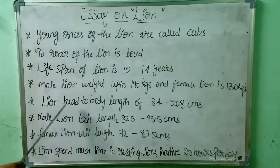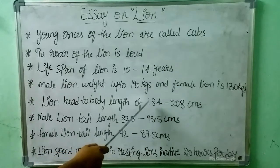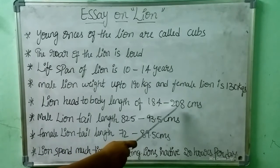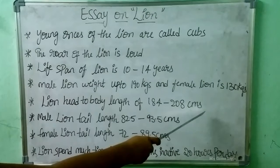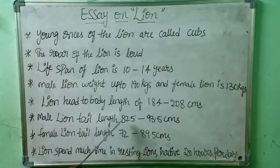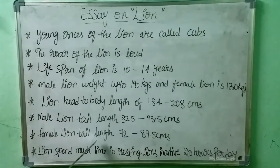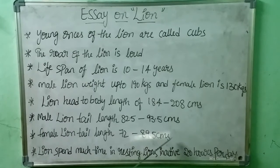Lion head to body length is 184 to 208 cm. Male lion's tail length is 82.5 to 93.5 cm. Female lion's tail length is 72 to 89.5 cm.